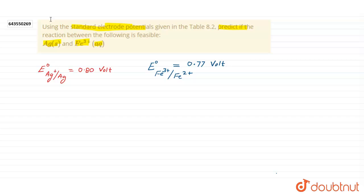Guys, these are the values of standard electrode potential for Ag plus to Ag, E naught reduction, positive 0.80 volt for silver ion. And for Fe3 plus to Fe2 plus E naught reduction is positive 0.77 volt.